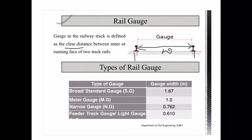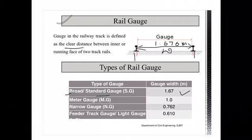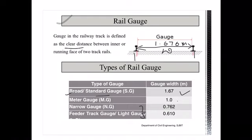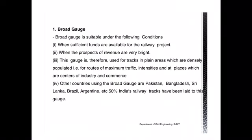Depending on the width provided between the inner ends of the two rail sections, Indian railways has four different types of railway gauges. The first is the broad gauge, popularly called the standard gauge, with a width of 1.676 meters. The second is the meter gauge with a clear distance of 1.0 meter. The third is the narrow gauge with a gauge width of 0.762 meters, and the last is the feeder track or light gauge with a width of 0.610 meters. The narrow gauge range is 0.762 to 0.610 meters.